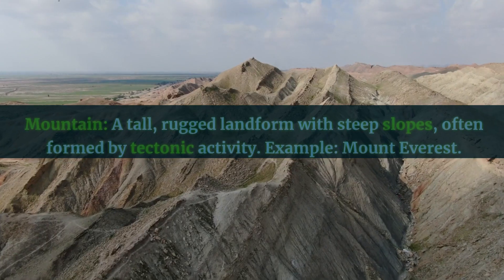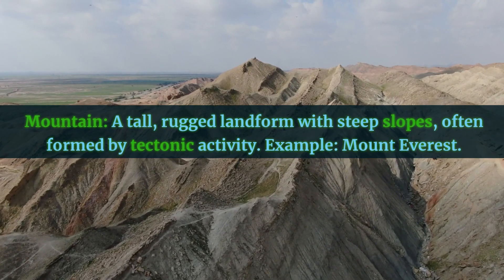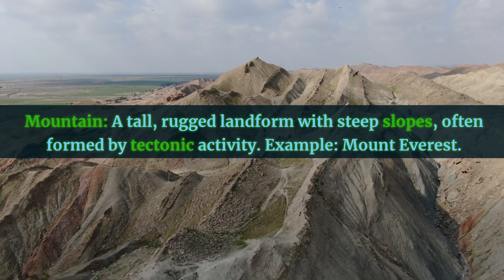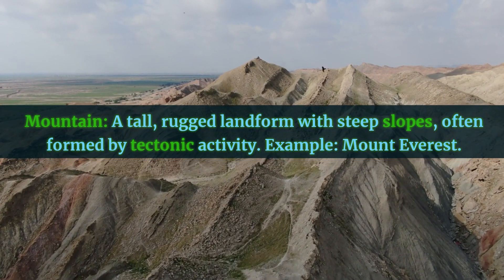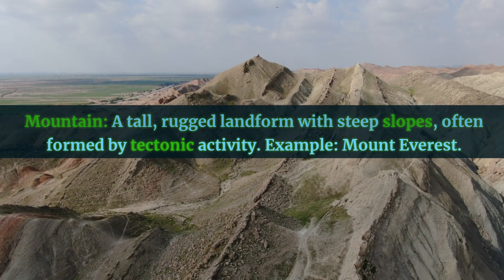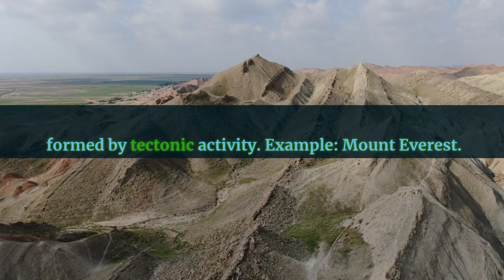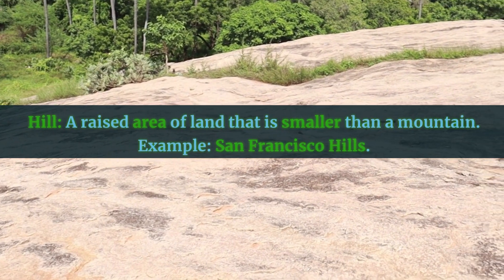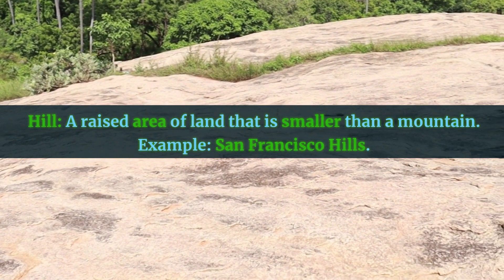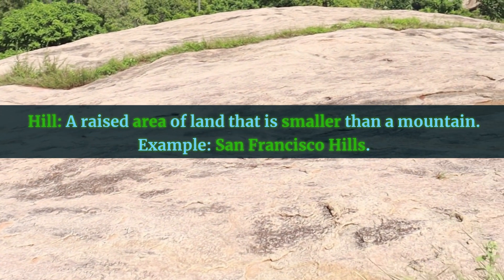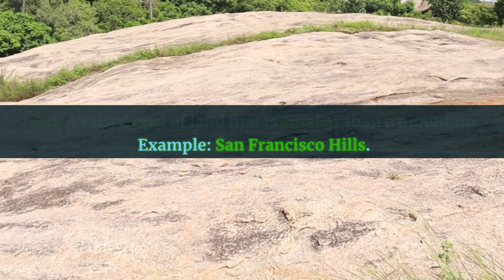Landforms. Mountain: a tall, rugged landform with steep slopes, often formed by tectonic activity. Example: Mount Everest. Hill: a raised area of land that is smaller than a mountain. Example: San Francisco Hills.